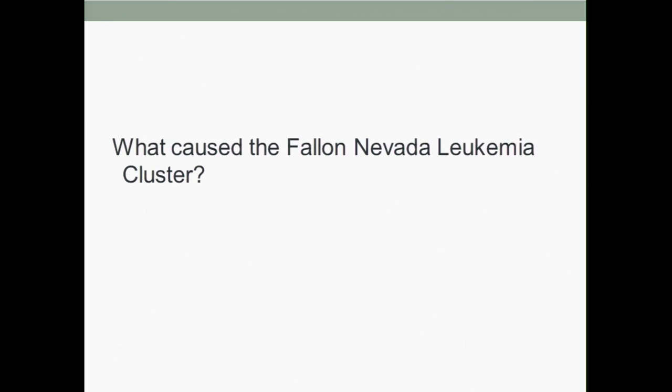Most cluster investigations, including everything I will present today, have been the result of an analysis after a cluster has already been deemed a cluster. Looking at this from a more population-based approach, which we are currently underway in the CCLS, will give a much better answer to whether these clusters do occur. But if we can accept that clusters of childhood leukemia do indeed exist, the Fallon leukemia cluster is probably the most poignant example we've had. The question today is: what caused the Fallon, Nevada leukemia cluster? And I can say with a high degree of certainty that I will not answer that question today.